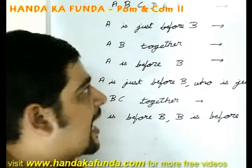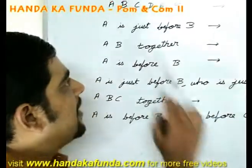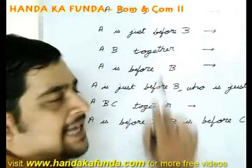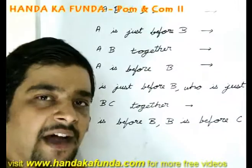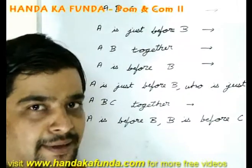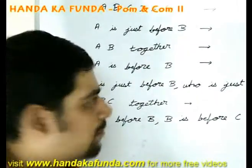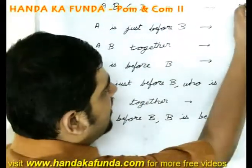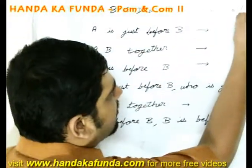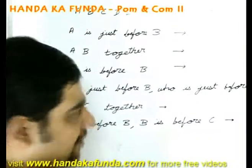Let us suppose we have 6 friends A, B, C, D, E, F. In how many ways can they sit in a row? That would simply be 6 factorial.